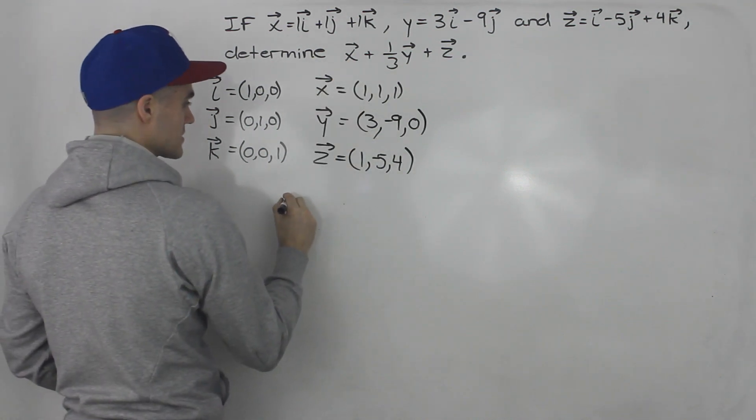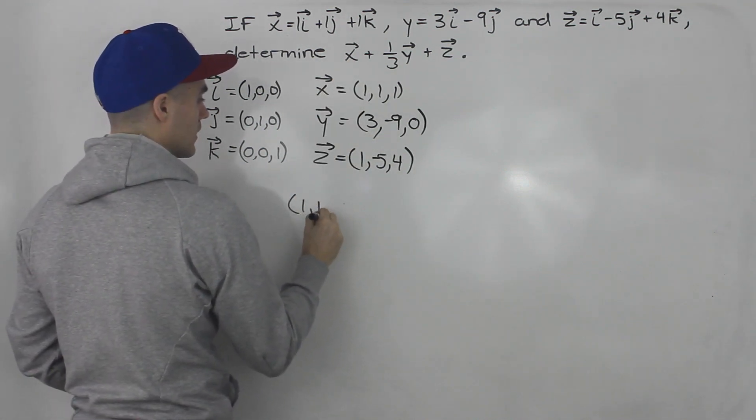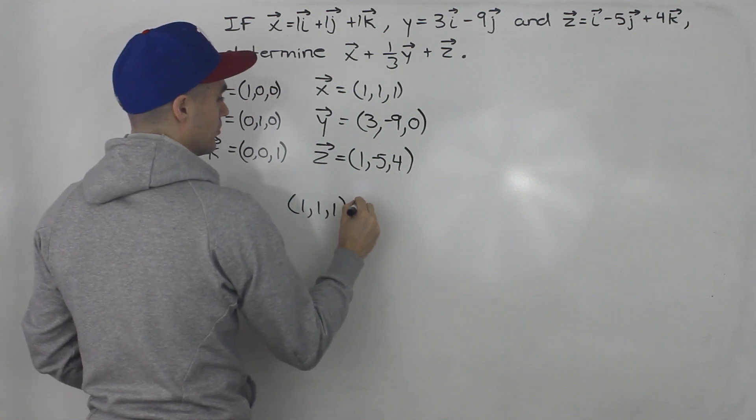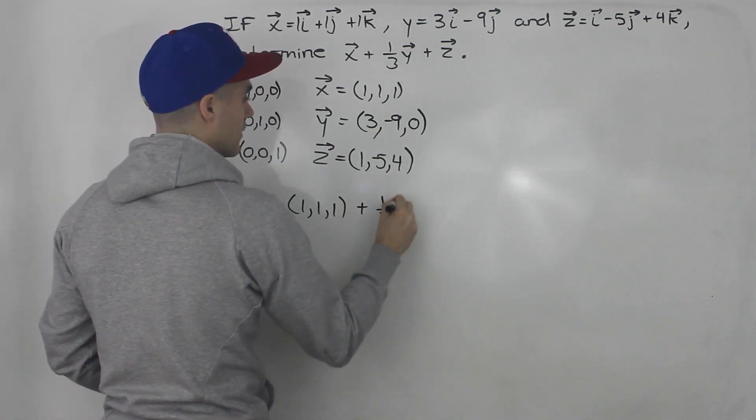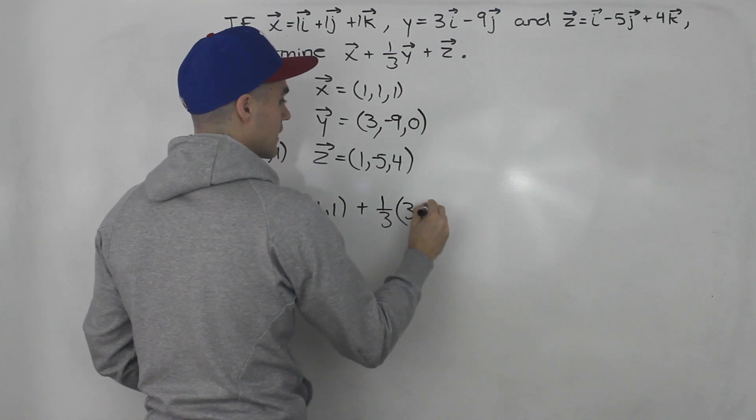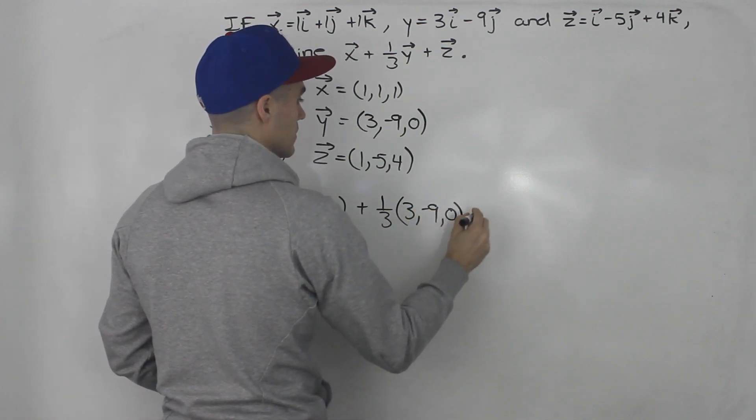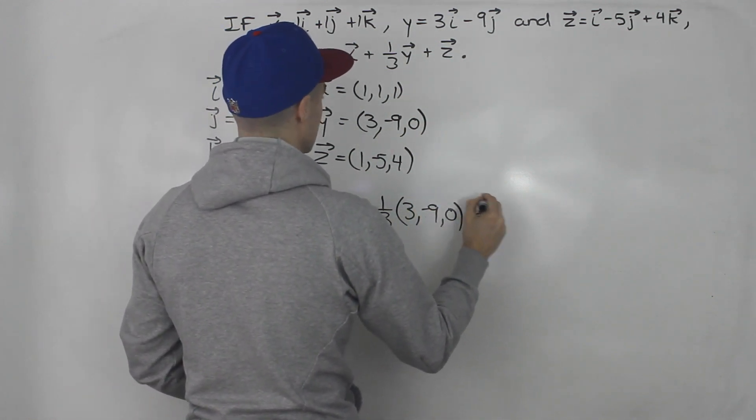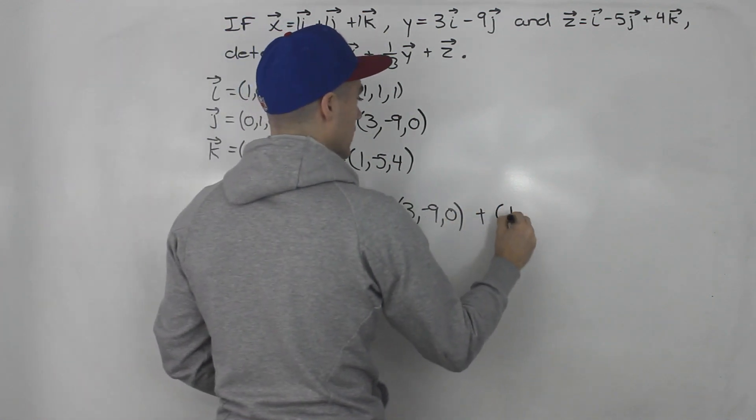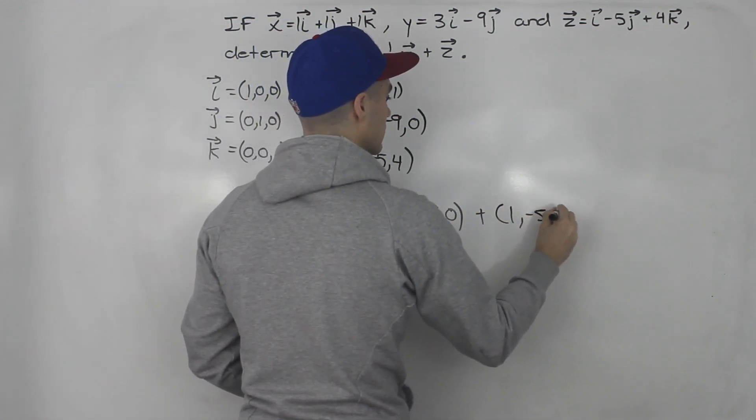So we would have vector x so that would be (1, 1, and 1) plus 1 third of vector y which would be (3, negative 9, and 0) plus vector z which would be (1, negative 5, and 4).